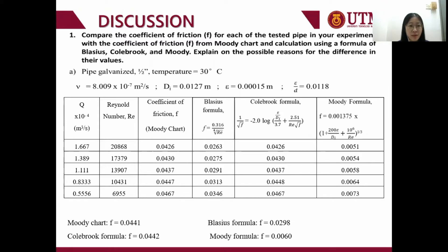For the discussion, our first discussion is to compare the coefficient of friction for each of the test pipes in the experiment with the coefficient of friction from the Moody chart and calculations using the formulas of Blasius, Colebrook, and Moody. The possible reasons for differences in their values are explained.